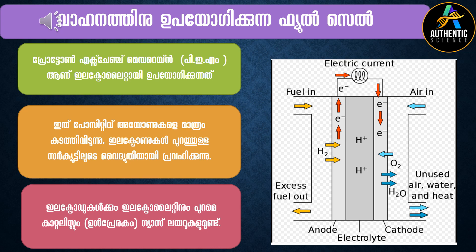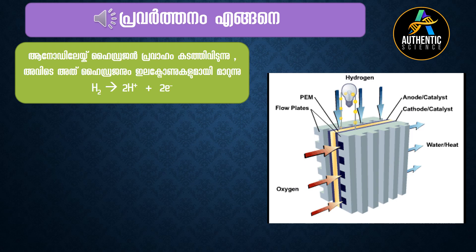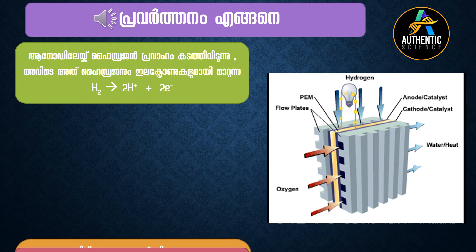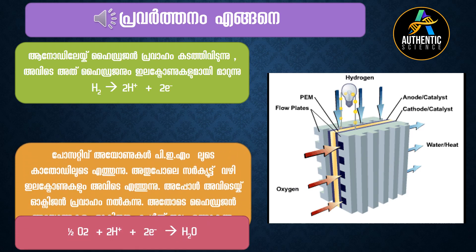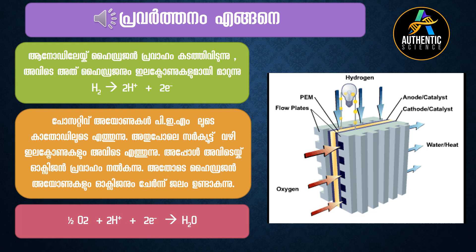In this fuel cell, hydrogen enters on one side and oxygen on the other. Hydrogen becomes electrons and positive ions. The positive ions pass through the membrane to the oxygen side, generating current, or electricity.